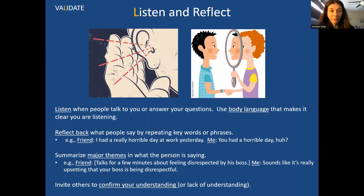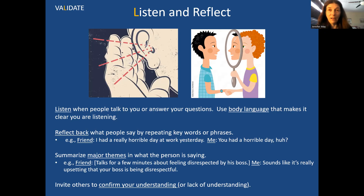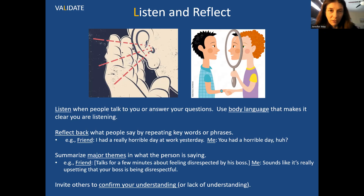L is for listen and reflect. You're asking them questions and talking to them, so it's important to show that you're listening — using your body language, your proper eye contact, putting your phone down, doing one thing at a time, and giving them your attention. This is inherently validating because it shows they're worthy of being listened to. Then just reflect back what they're saying. So if someone says, I had a really horrible day at work yesterday, one of the first things you might say is, wow, you had a really horrible day, huh? You're taking their words and reflecting them back, showing them that I heard what you just said.